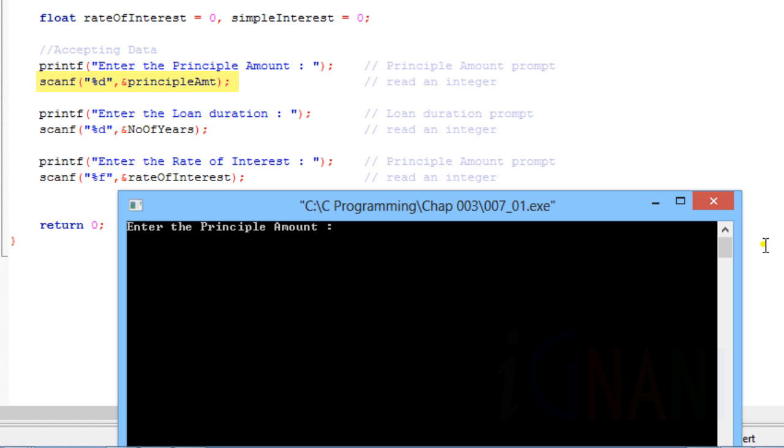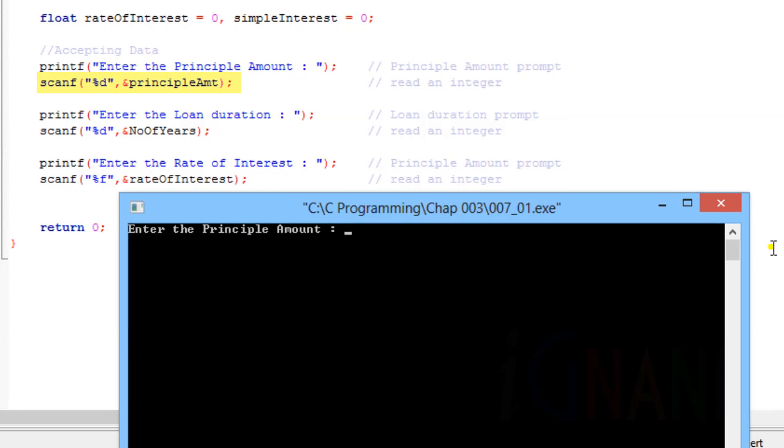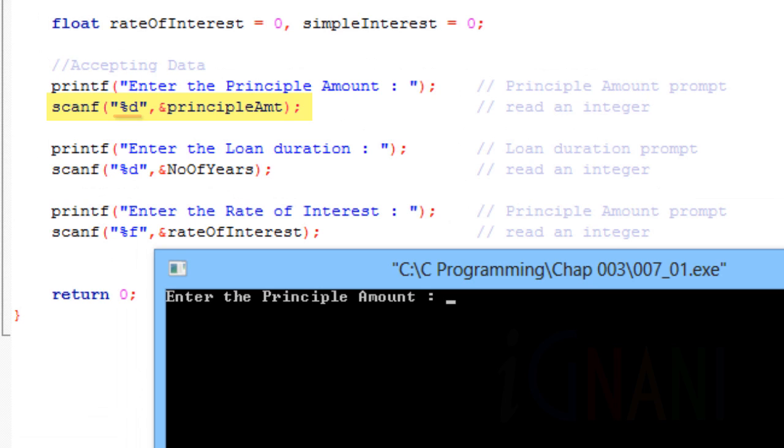The next statement on line 14 uses scanf to obtain a value from the user. The scanf function reads from the standard input, which is usually the keyboard. As you can see, it takes 2 arguments. First one is the format specifier, which indicates the type of data that should be input by the user. The percent d format specifier indicates that the data should be an integer, and the value entered by the user will be converted into an integer.